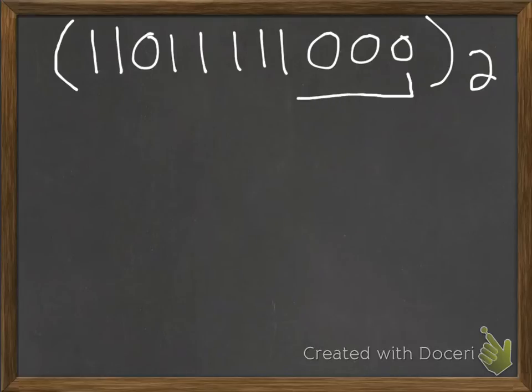This will be one group, and this is 2 to the 3, which is 8. Then we break it up into four groups again, and this will be 15, and 15 is F.